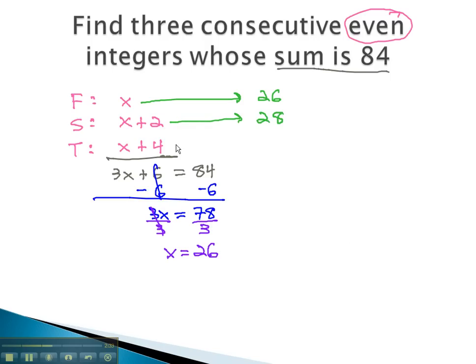The third number is 4 more than that, 26 plus 4 is 30. Notice, we have 3 consecutive even integers, whose sum is 84.